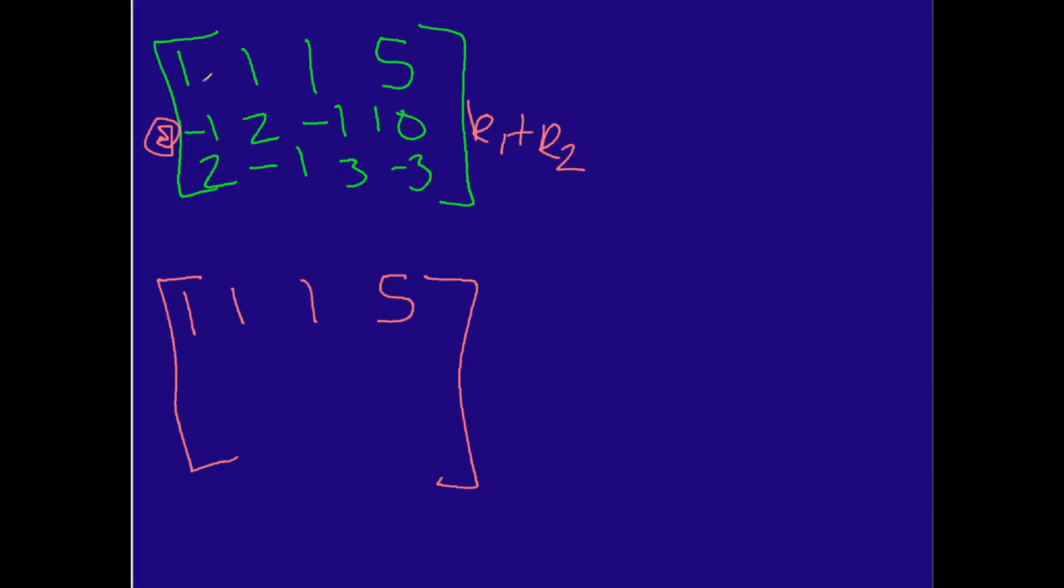This row does not change at the top, 1, 1, 1, 5. Now here's the trick: 1 plus negative 1 is going to be 0, 1 plus 2 is going to be 3, 1 plus negative 1 will be 0, and then 5 plus 10 will be 15. So that's what's new here. And then the bottom row is still going to be the same: 2, negative 1, 3, negative 3.